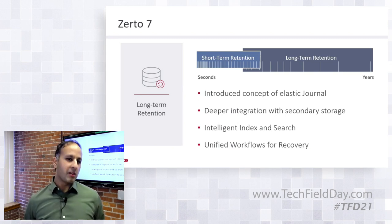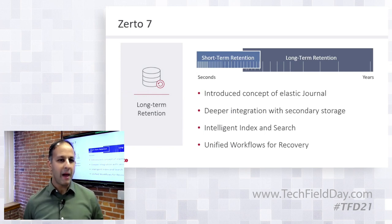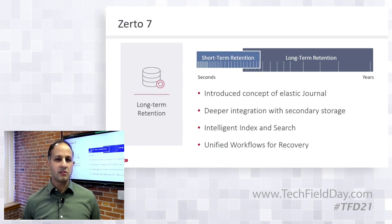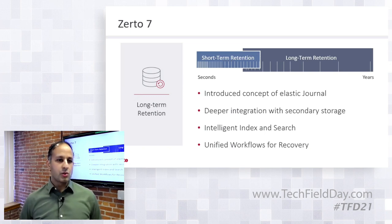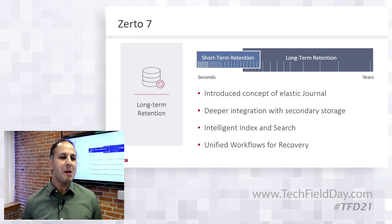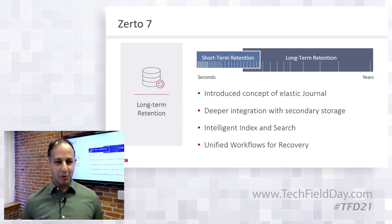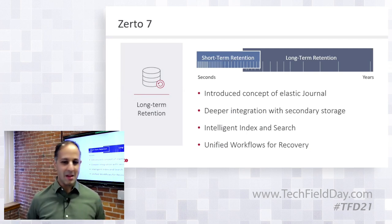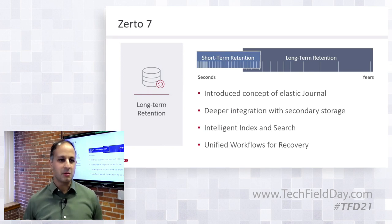With the elastic journal, we needed to integrate with secondary storage. Customers asked if we could support their Exagrid, Data Domain, StoreOnce, or other deduplicated back-end storage to keep secondary storage costs low. Out of the gate we supported SMB and NFS devices, and we added support for many deduplication engines. As we extend beyond the short-term journal, customers want to search for something from days, weeks, or months ago, so we added the ability to index and search across that. We also added a unified single recovery flow allowing users to search by date, VM name, or file and easily pull data back from either long-term or short-term journal.